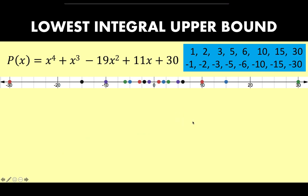So let's search for the upper bound. For practical reasons, it is not useful to test 30 as an upper bound since 30 is already far to the right. But if we choose positive 5 and it turns out that 5 is an upper bound, then we can eliminate 6, 10, 15, and 30 as possible roots. Similarly, if we identify a lower bound like negative 6, then we can eliminate negative 10, negative 15, and negative 30 as possible candidates. That's the function of identifying the upper bound — we want to narrow down our list of possible real roots.